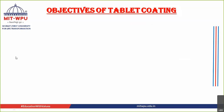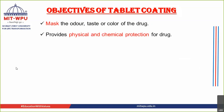The first objective is to mask the odor, taste, and color of the drug. Second, it provides not only physical but also chemical protection, because the drug is not going to come in contact with air, humidity, or moisture. It also controls the release of the drug — you can make a sustained release tablet, a controlled release tablet, an enteric tablet, or an extended release tablet.